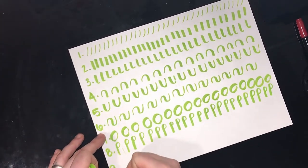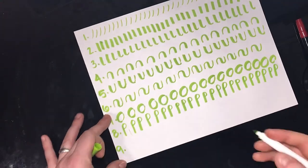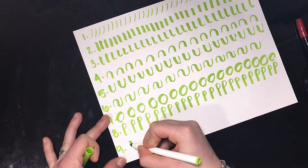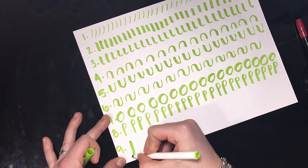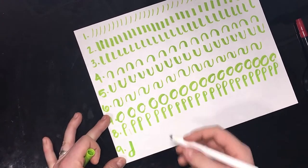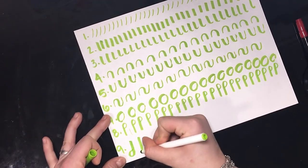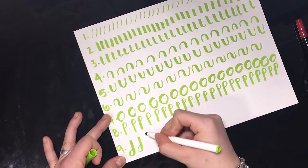And then the last one we're going to do is the J stroke. So it's going to be the opposite of the P stroke. So you're going to do your long, your thick line down and then curl it over. And you want to make your curly Q as thin as possible.